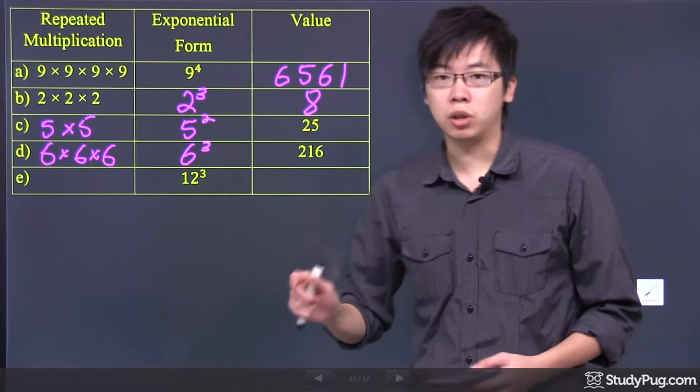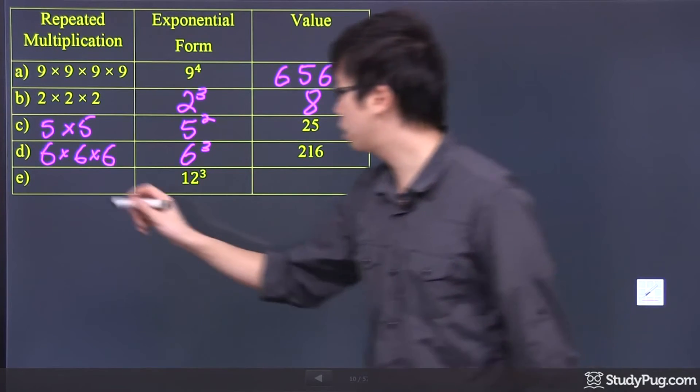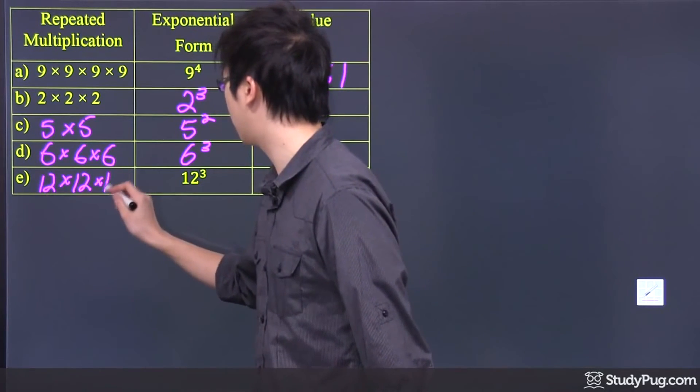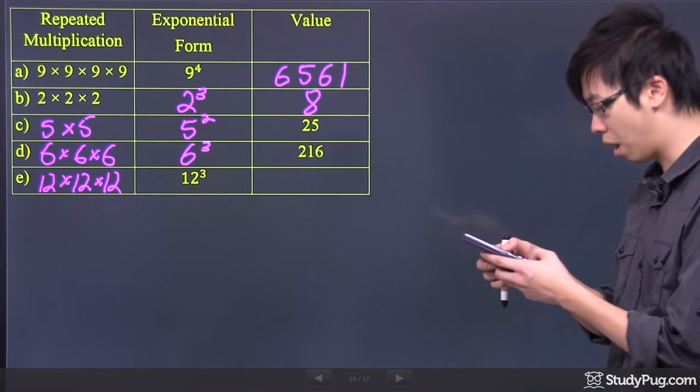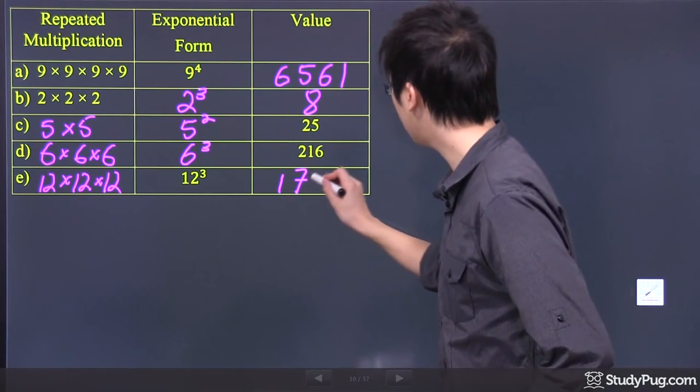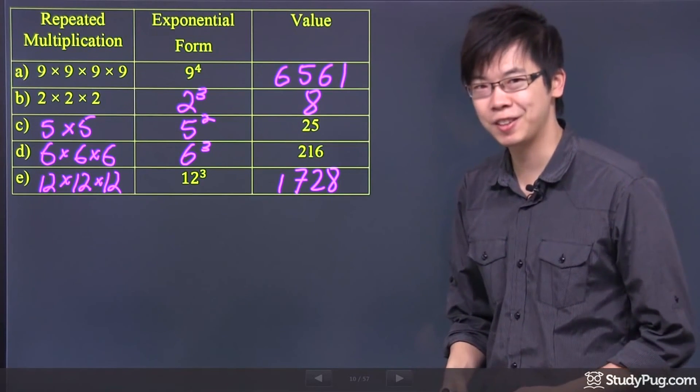Next question, the final one. 12 to the power of 3, which is easier, because we do know the base is 12 raised to the power of 3 times. It means 12 times itself, 3 times. Again, use your calculator, raise the power of 12 to the power of 3. We got ourselves 1,728, and that's the end of this question right here. Thanks for watching.